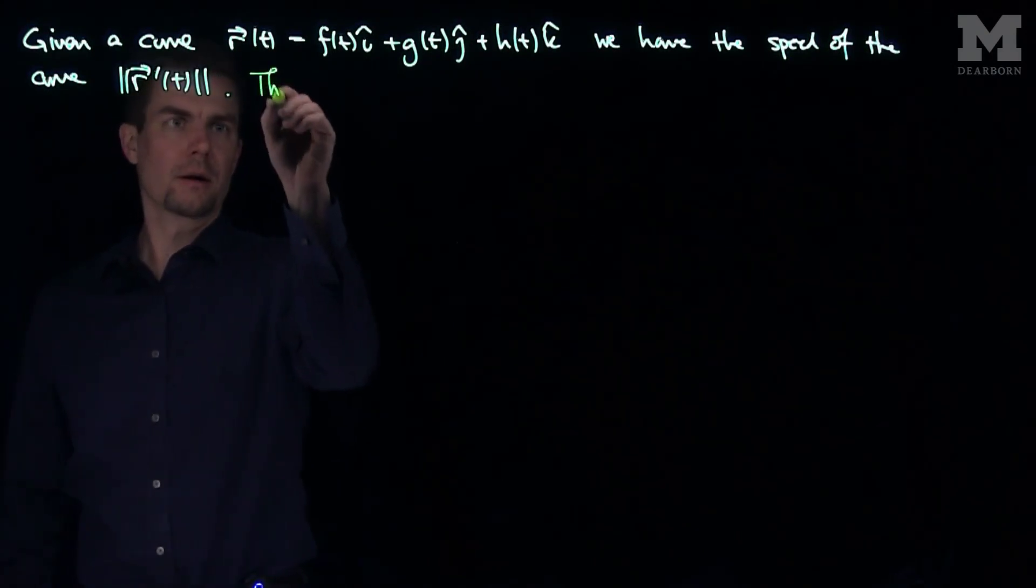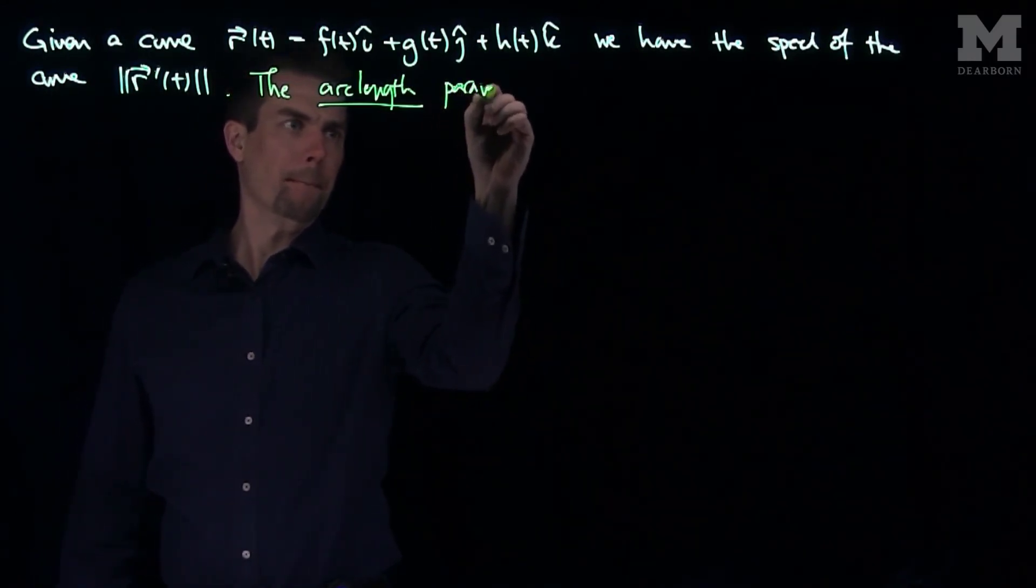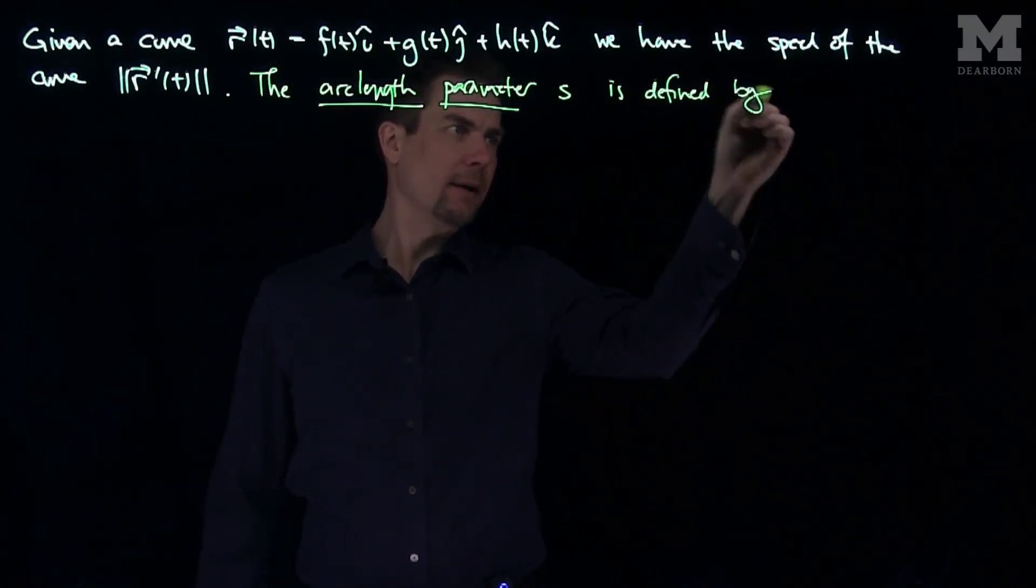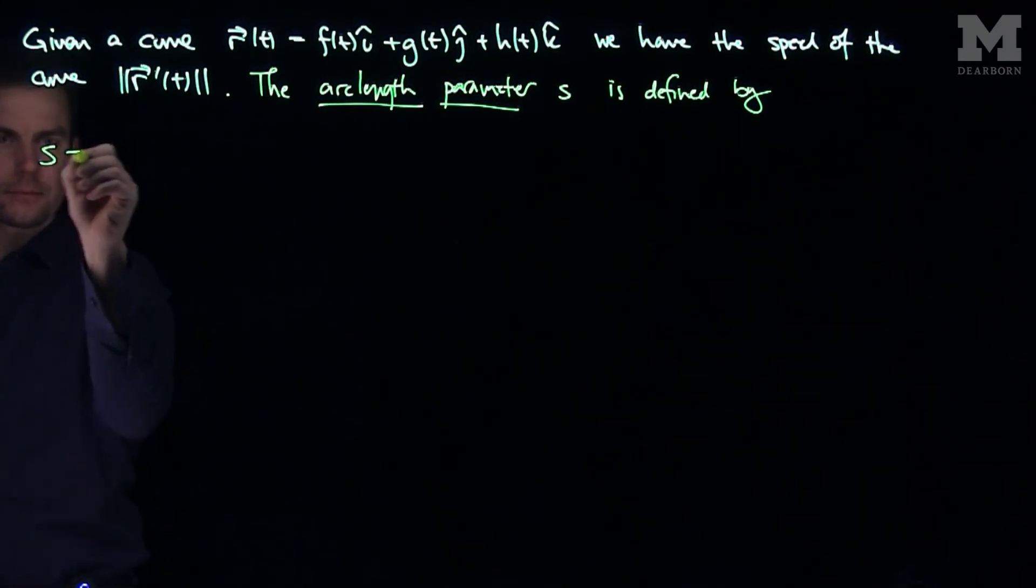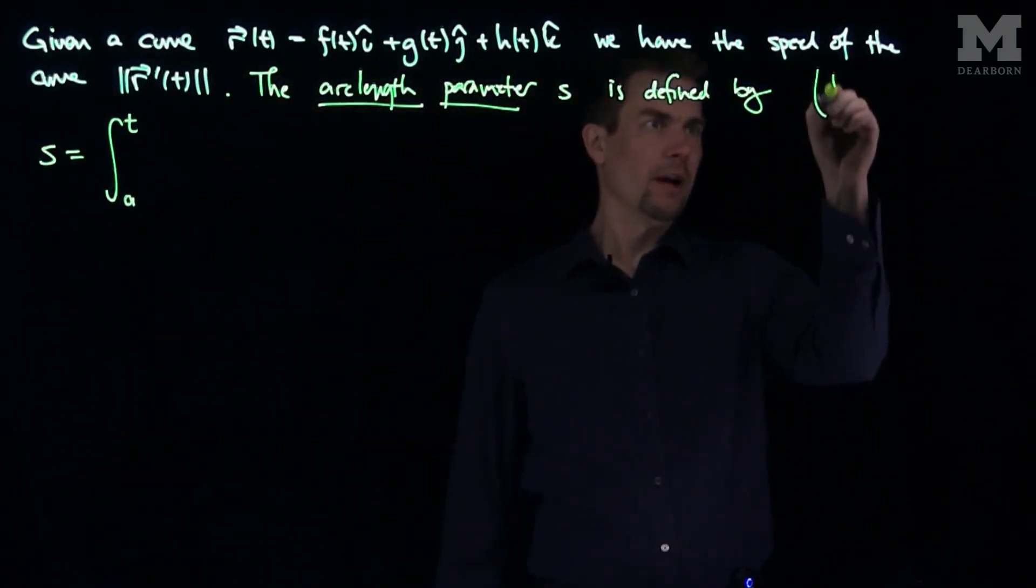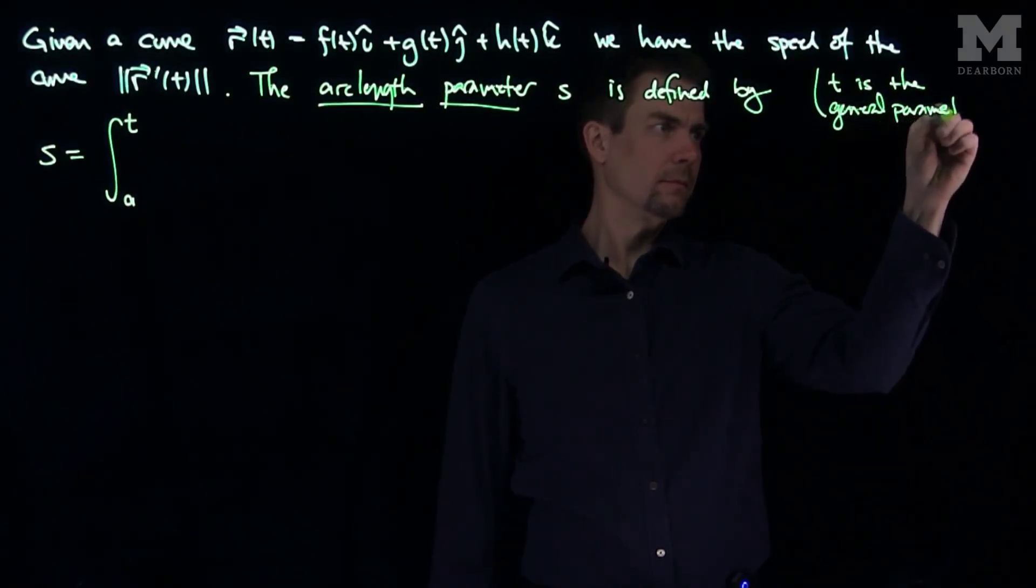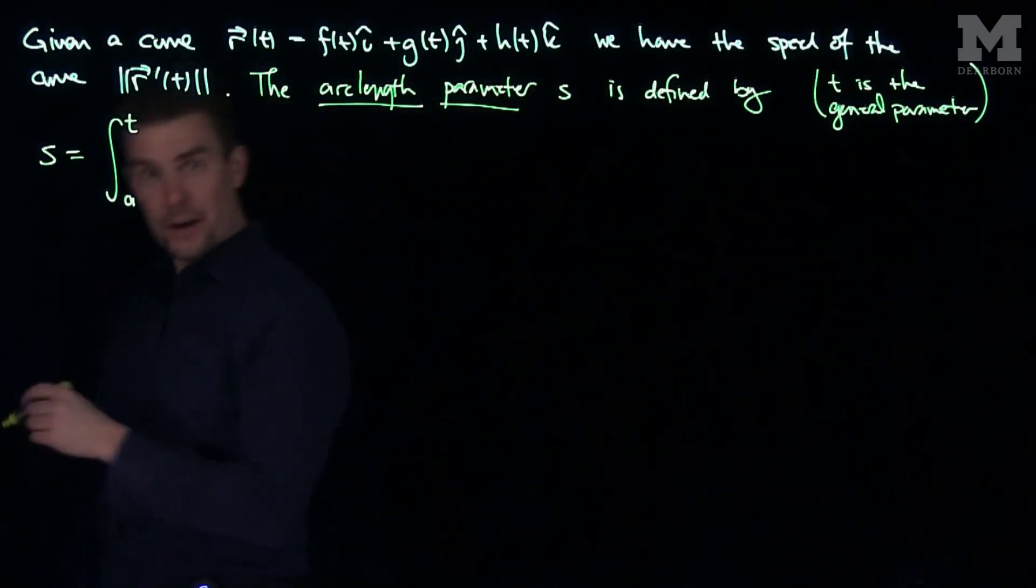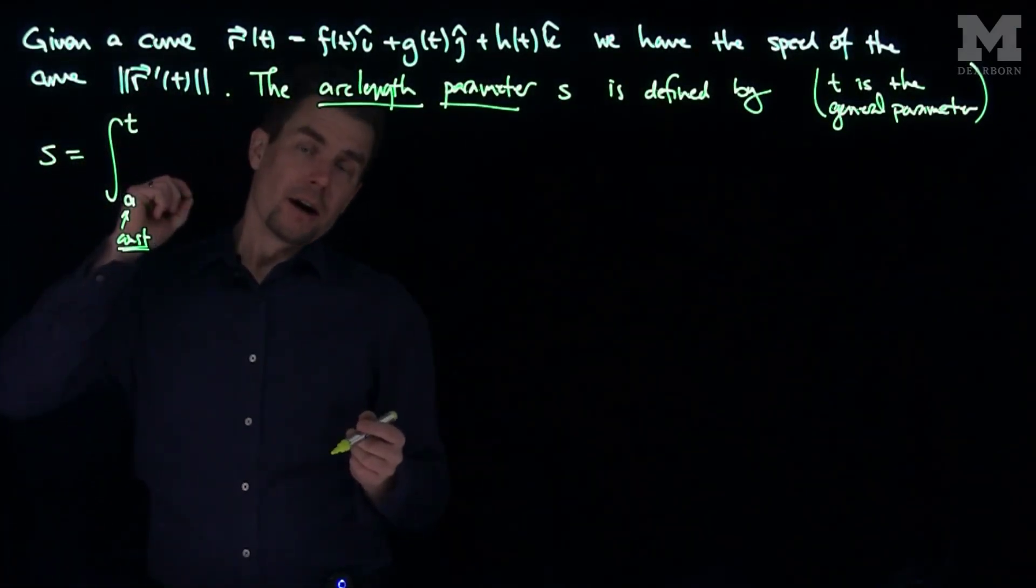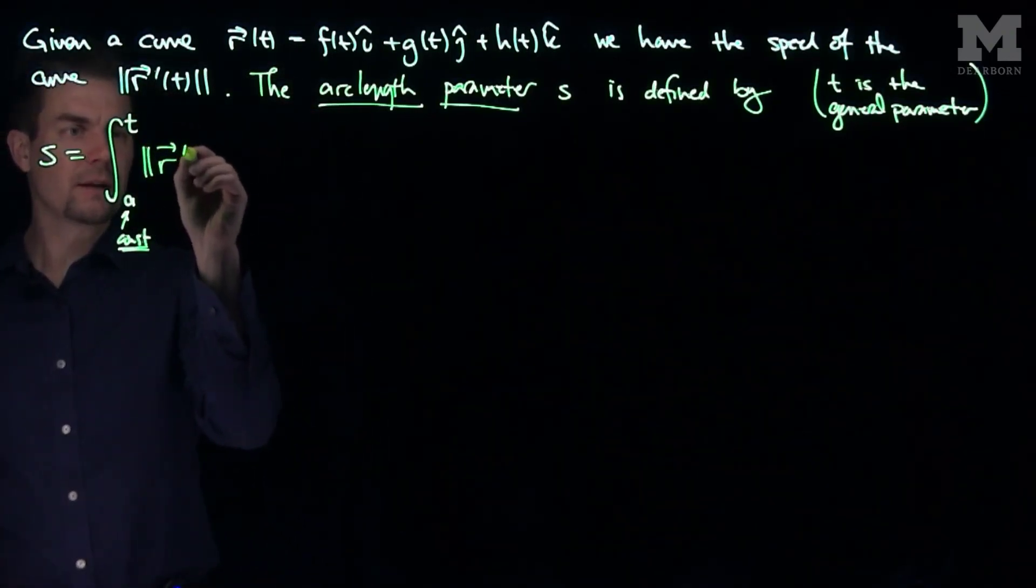The arc length parameter s is defined by the relationship that s is the integral from a constant a to t, where t is called the general parameter. This constant can be chosen to be whatever you want to make your computation easy. It's the integral from a constant to the general parameter of the speed of the curve.